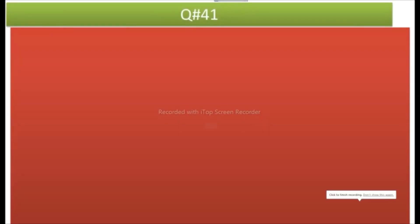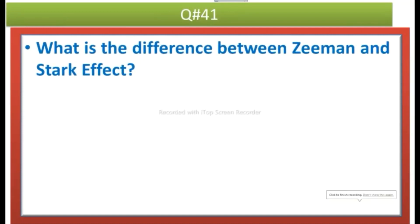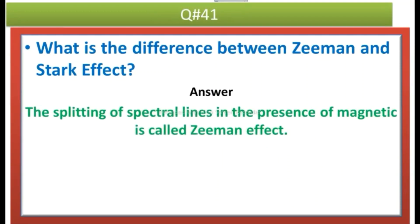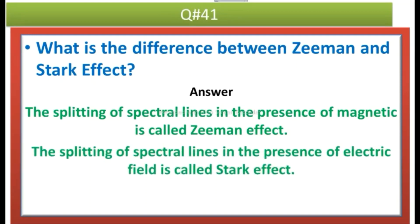Question number 41 is what is the difference between Zeeman and Stark effect? Answer: The splitting of spectral lines in the presence of magnetic field is called Zeeman effect. The splitting of spectral lines in the presence of electric field is called Stark effect.